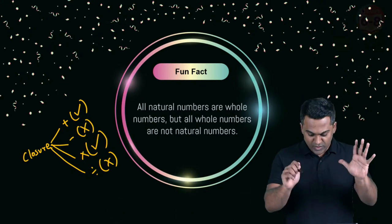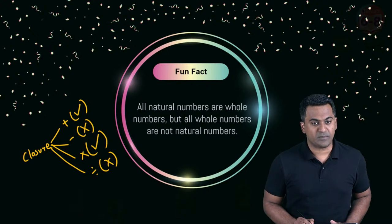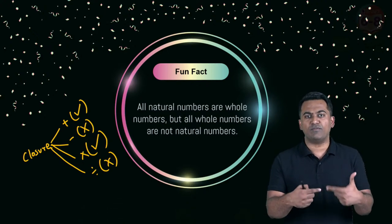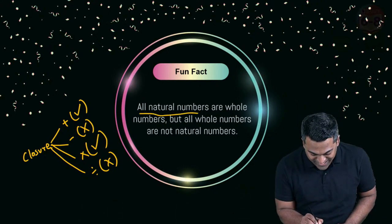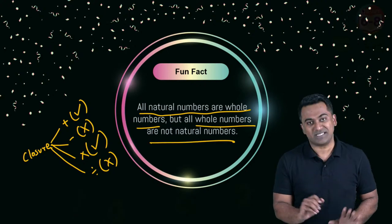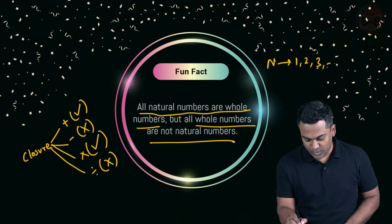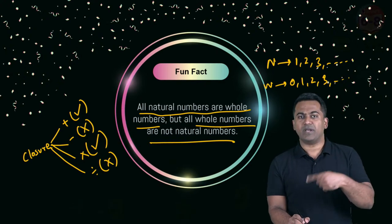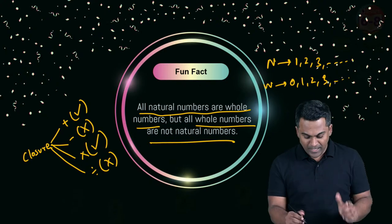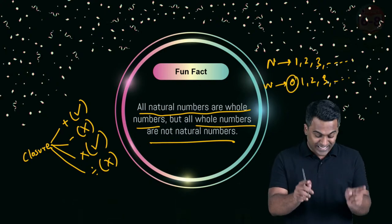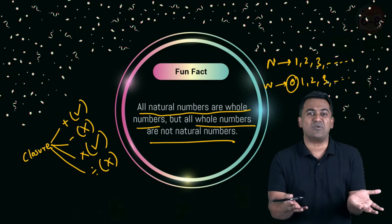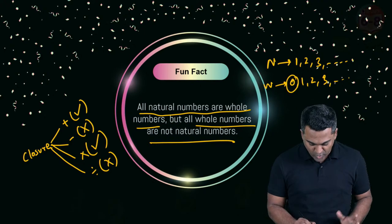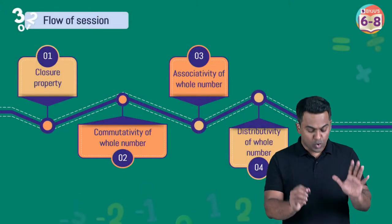Quick clarification on natural numbers vs. whole numbers: natural numbers are counting numbers — one, two, three and so on. Whole numbers are zero, one, two, three and so on. All natural numbers are whole numbers, but not all whole numbers are natural numbers, because zero is only a whole number and not a natural number.